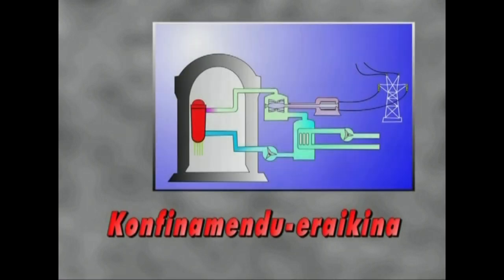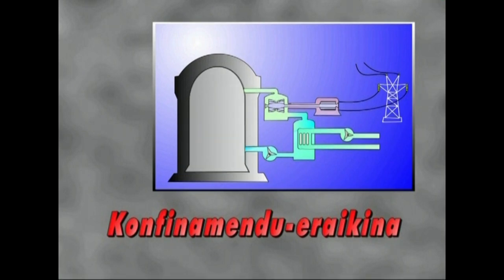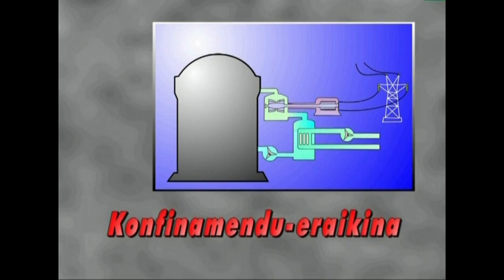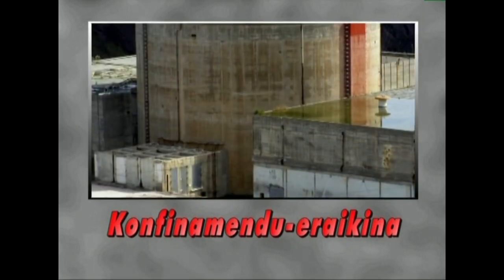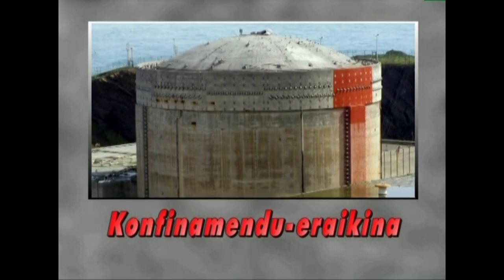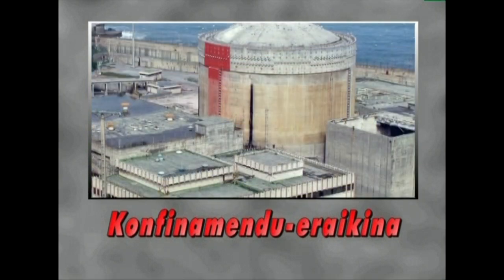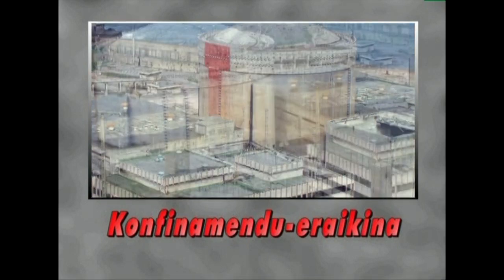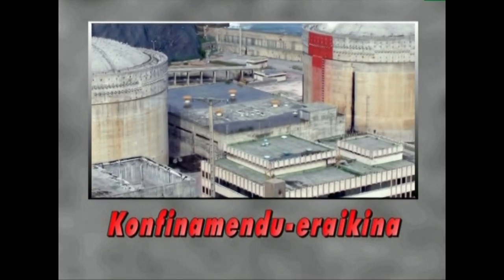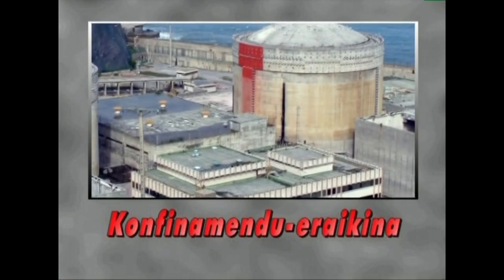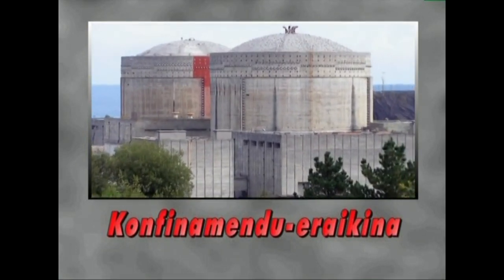Naiz eta horretarako probabilitate oso txikia dagoen, kontuan izan behar da oste sistemaren apurketa gertalitekeela, eta ondorioz, erradioaktiboak diren fizioproduktuak sistematik kanpora ateratzea. Sistematik kanporako iesa eragozteko, erreaktoreak eta zirkuitu primarioako saturiko multzoa apurketa larrienaren ondoriozko presioari eusteko gai den eraikin baten barnean daude kokaturik. Eraikin horri, konfinamendu eraikina deritzo.